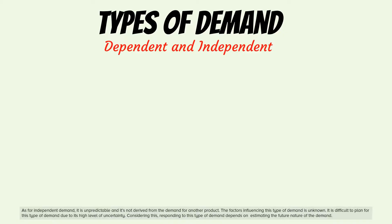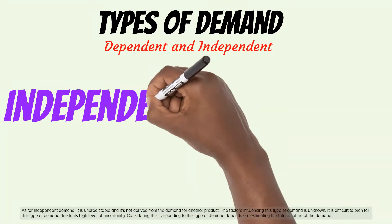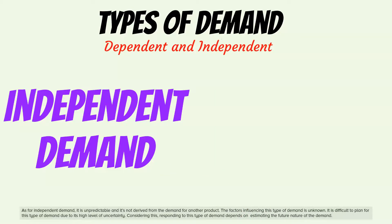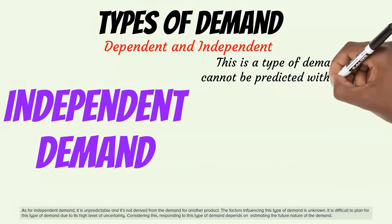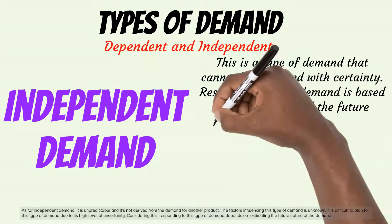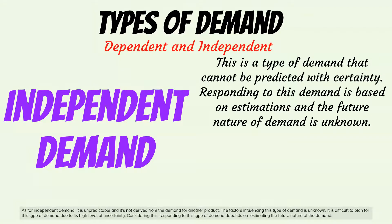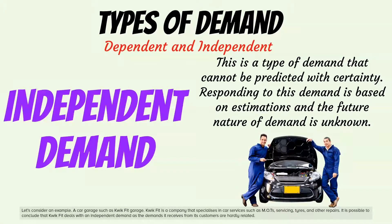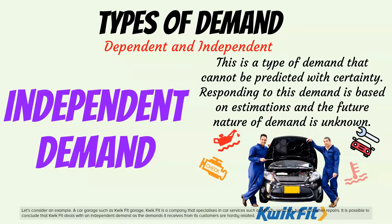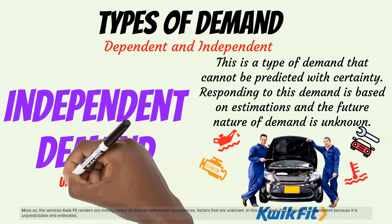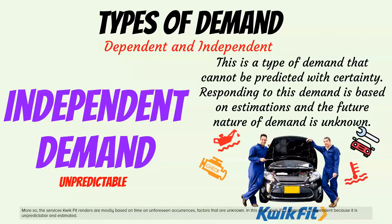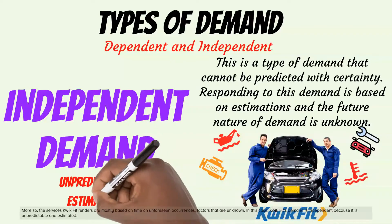As for independent demand, it is unpredictable and not derived from the demand for another product. The factors influencing this type of demand are unknown, making it difficult to plan for due to its high level of uncertainty. Responding to this type of demand depends on estimating the future nature of the demand. For example, a car garage such as Quick Fit specializes in car services such as MOTs, servicing, tires, and other repairs. Quick Fit deals with independent demand as the demands it receives from customers are hardly related, mostly based on unforeseen occurrences — factors that are unknown. Quick Fit's demand is independent because it is unpredictable and estimated.